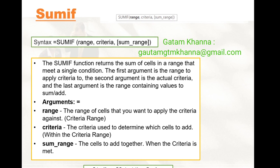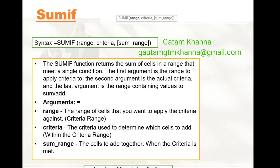SUMIF. The syntax for SUMIF is: equals to SUMIF, open parenthesis, range, comma, criteria, comma, sum range, then close parenthesis, then enter. The SUMIF function returns the sum of cells in a range that meet a single condition. The first argument is the range to apply criteria to, the second argument is the actual criteria, and the last argument is the range containing values to sum or add.